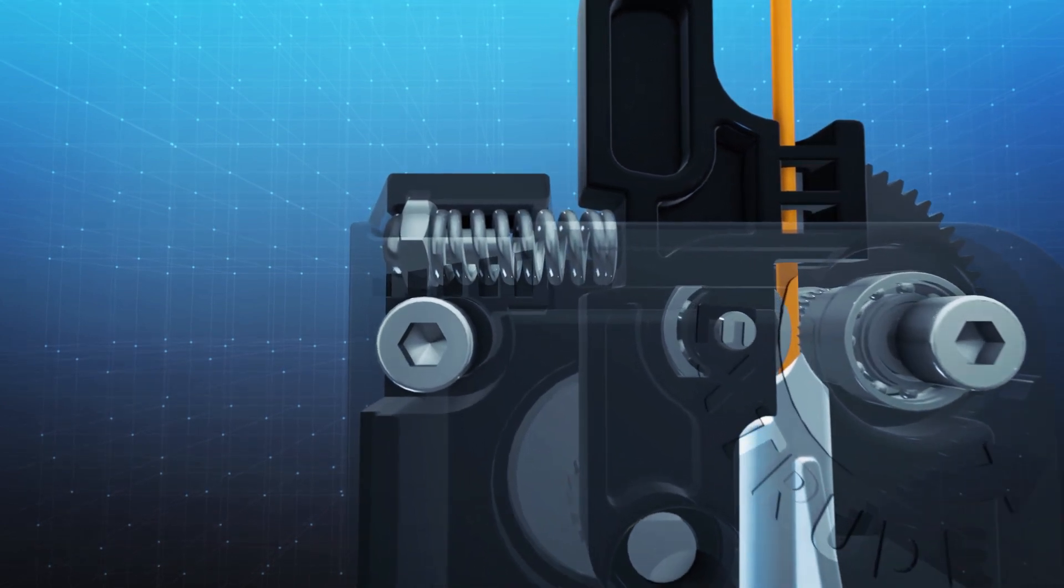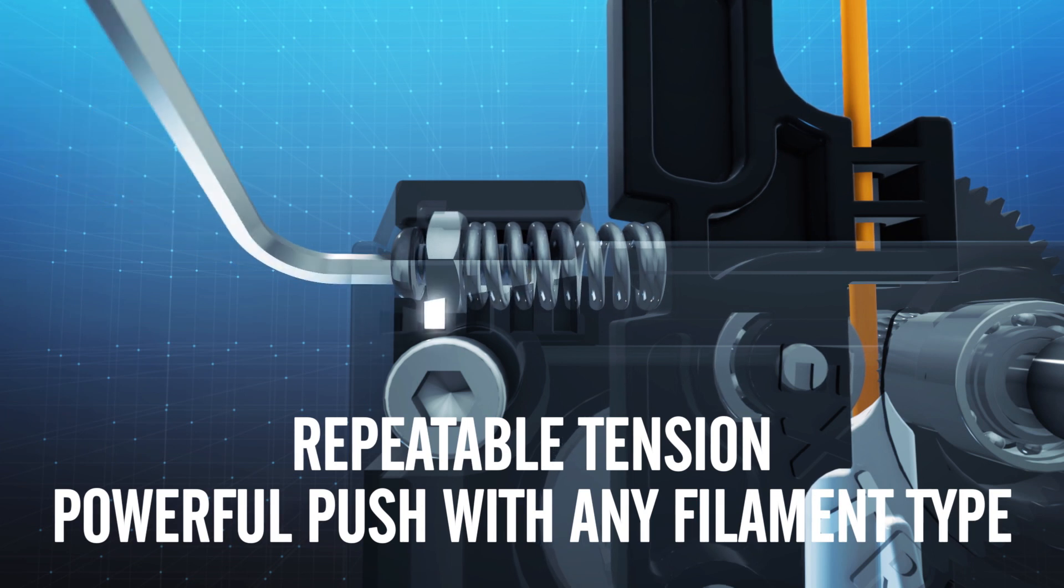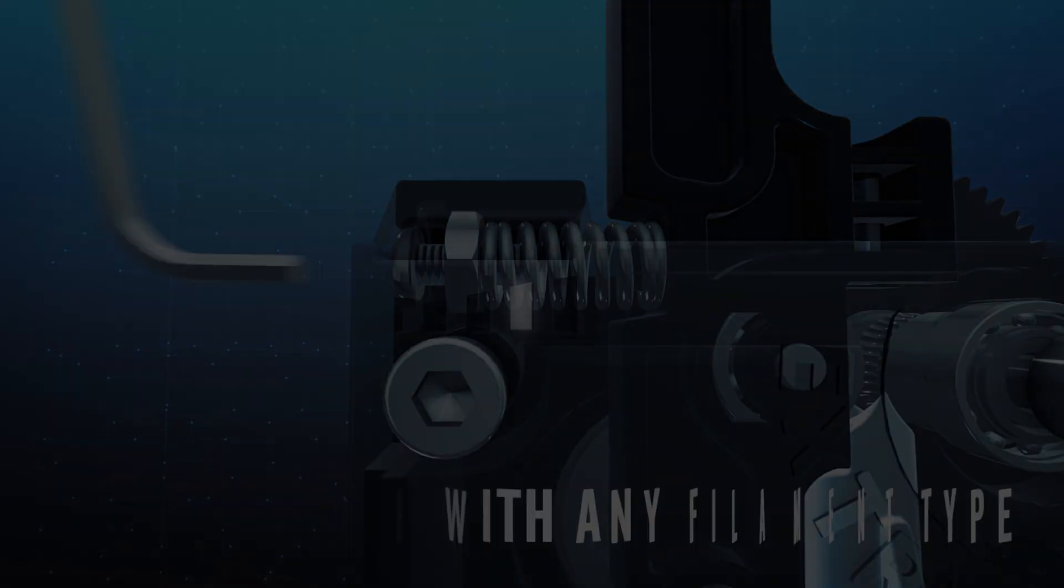Adjustable tension means that with Titan your printer will have control over all materials, from hard carbon fiber to soft flexibles. A force indicator and consistent spring ensures repeatability when changing materials, even from one extruder to another.